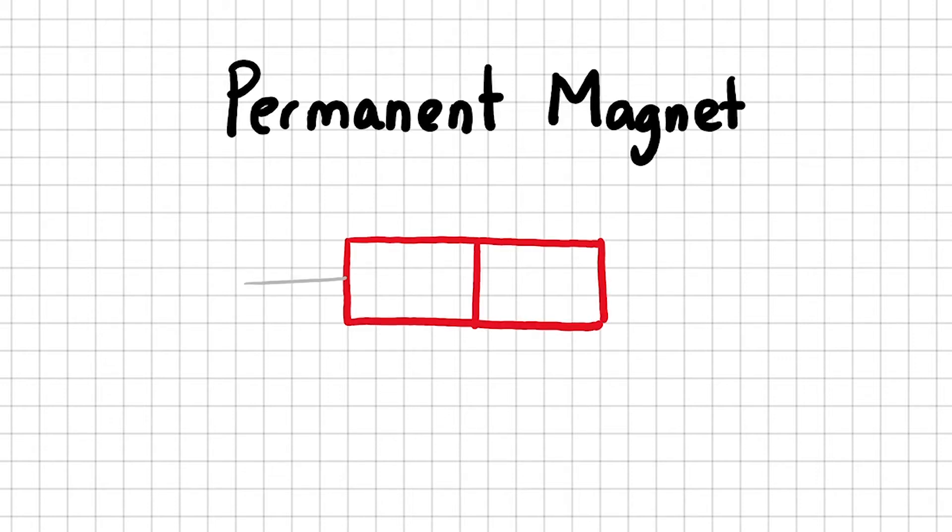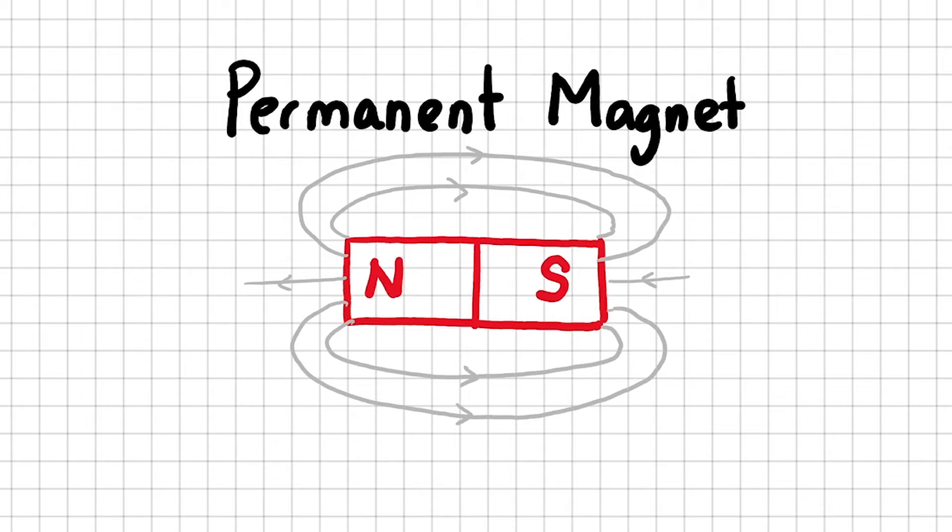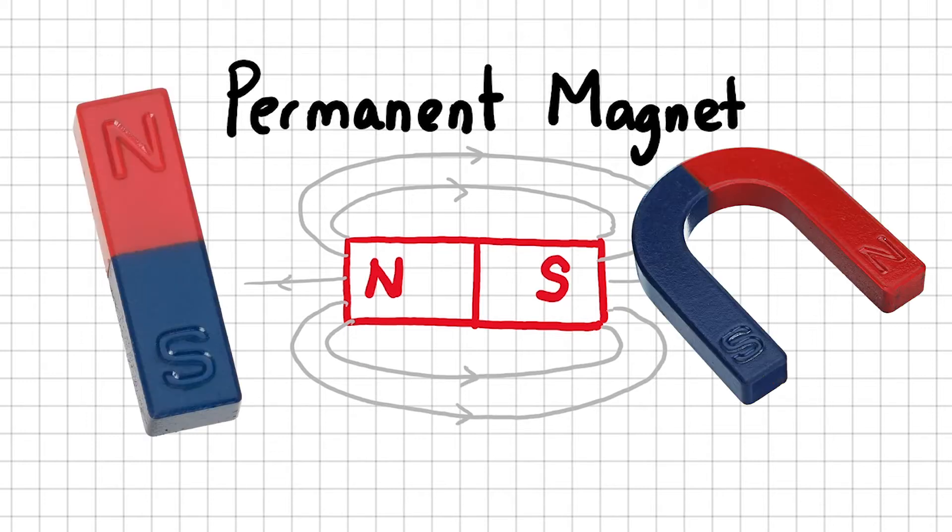A permanent magnet always has a magnetic field. It always has a north and a south pole. Bar magnets and horseshoe magnets are examples of permanent magnets.